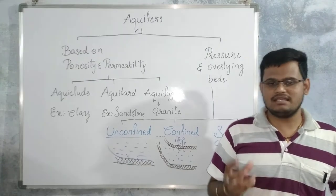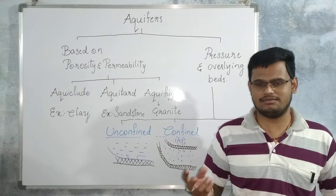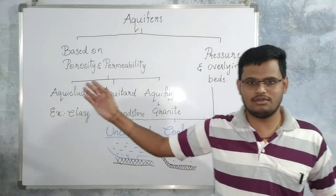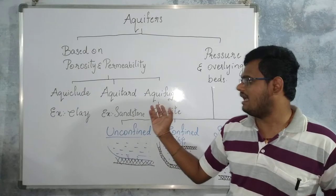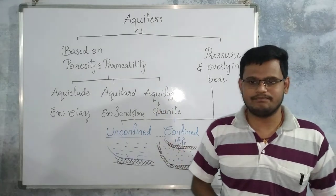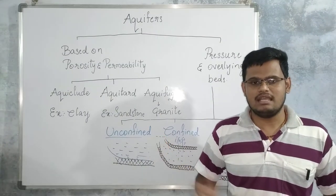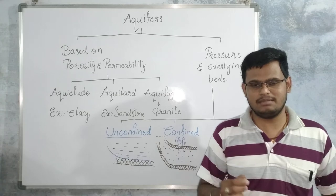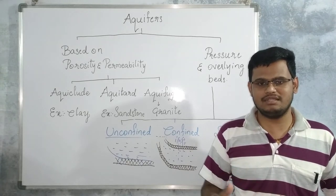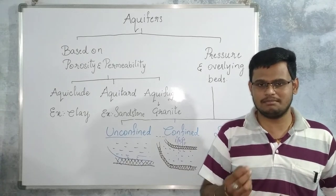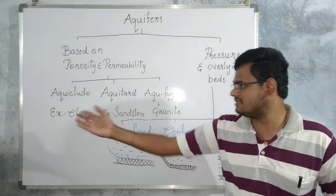Based on the porosity and permeability, these aquifers are of three types which include aquiclude, aquitard, and aquifuse. Aquiclude is a type of aquifer in which the porosity is present but the permeability is absent, which makes no use of the pore spaces present in it. The best example for aquiclude is clay.